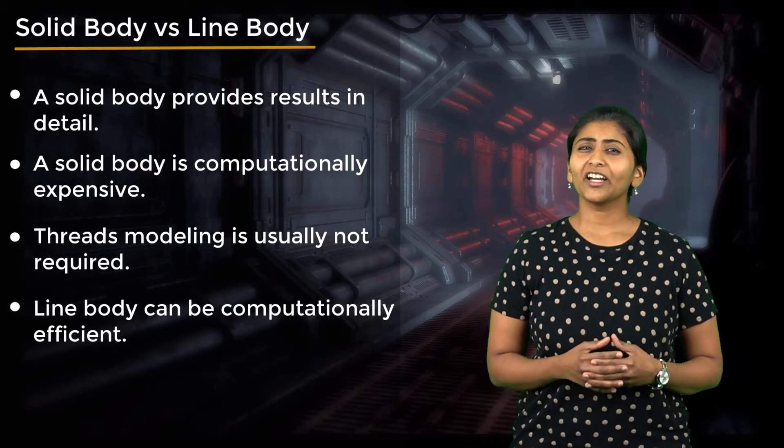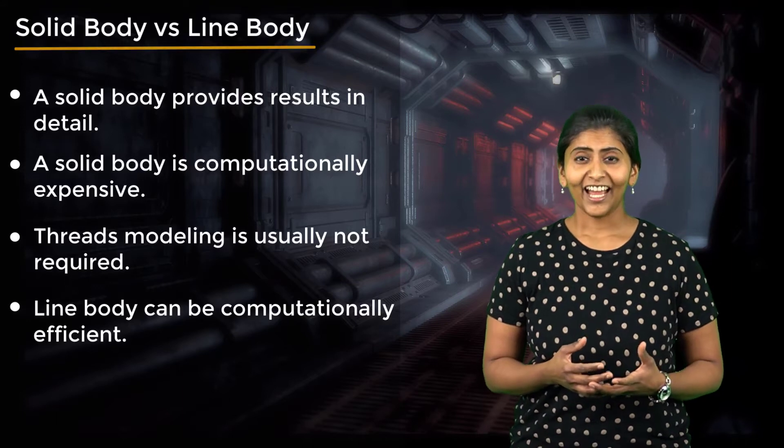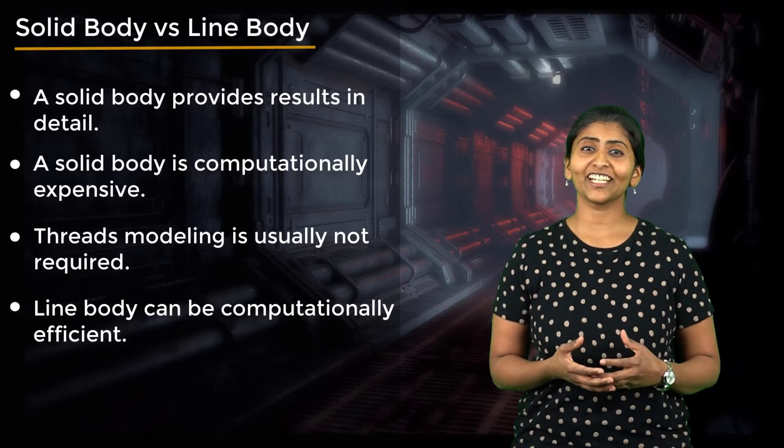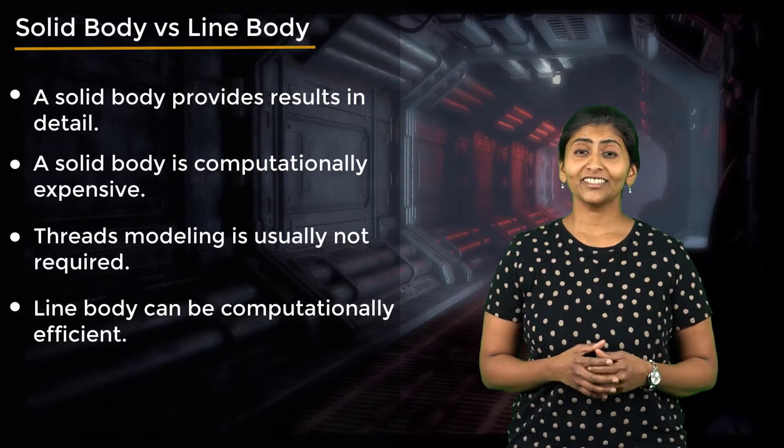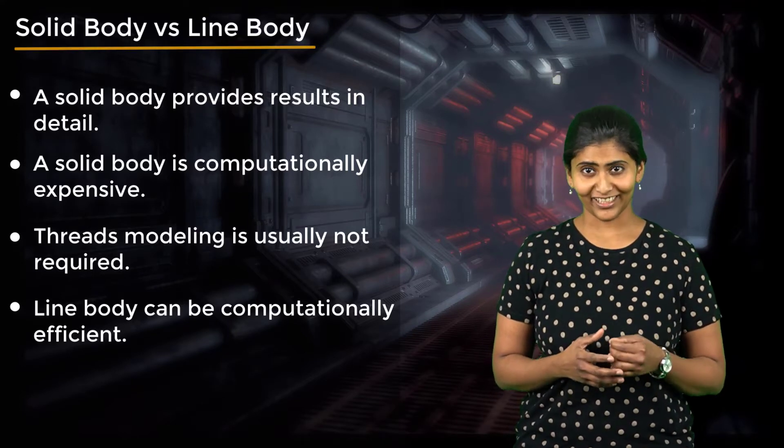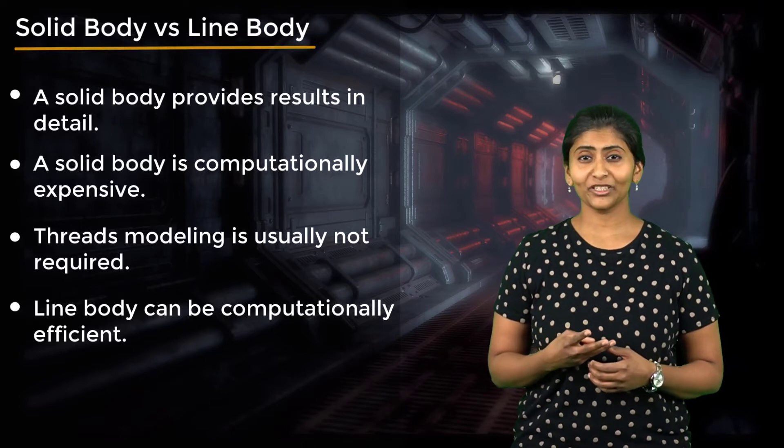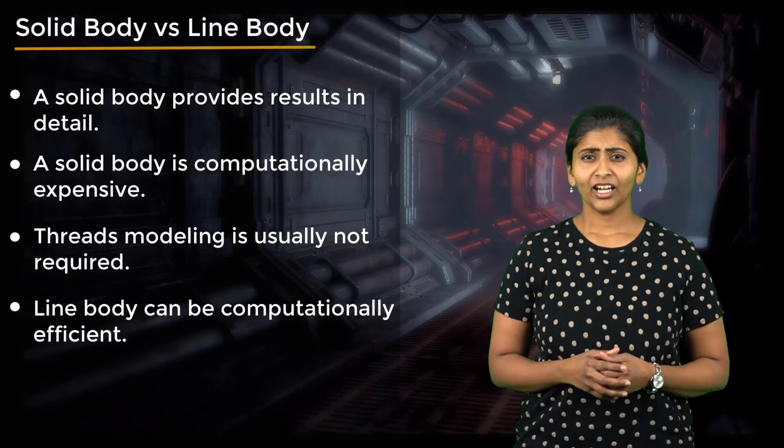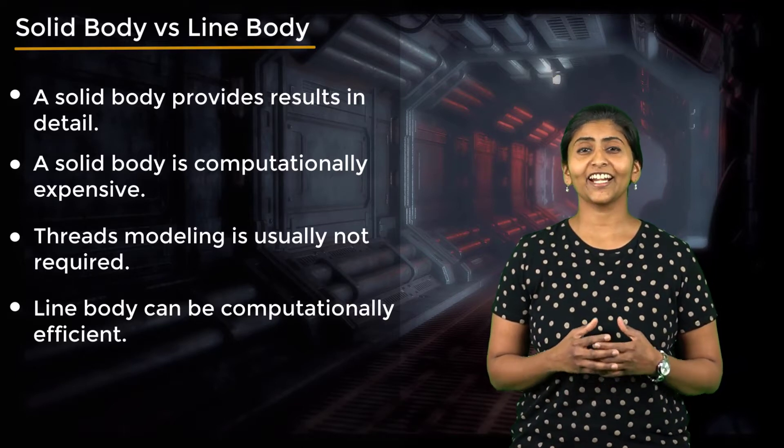Line bodies require smaller number of nodes to discretize the bolt and thus the solution time is reduced. Using line bodies gives us a reduced stress state. In other words, we get three stress components instead of six. But we can get fairly accurate results in bending and axial loading.